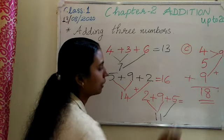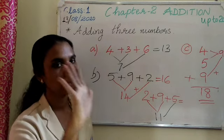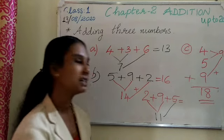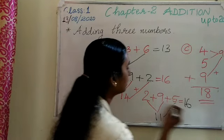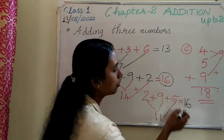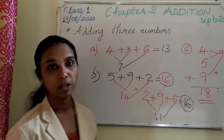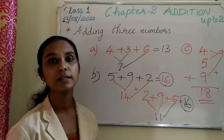11 plus 5. 11 in your mind, 5 finger. After 11, 12, 13, 14, 15, 16. So the sum is same. You look at this sum. Both are same. That means you change the order of numbers, it does not change the sum.